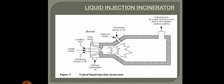Liquid waste is first fed and atomized into the combustion chamber through waste burner nozzles, which atomize the waste and mix it with combustion air. Atomization is achieved either by mechanical methods such as a rotary cup or pressure atomization system, or by twin fluid nozzles using high pressure air or steam. With a relatively large surface area, the atomized particles vaporize quickly, forming a highly combustible mix of waste fumes and combustion air.